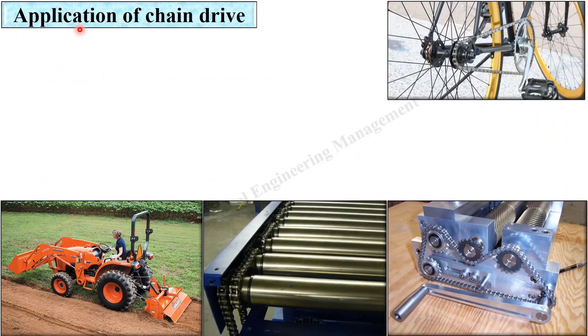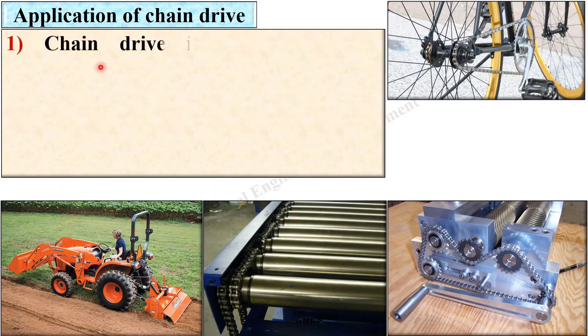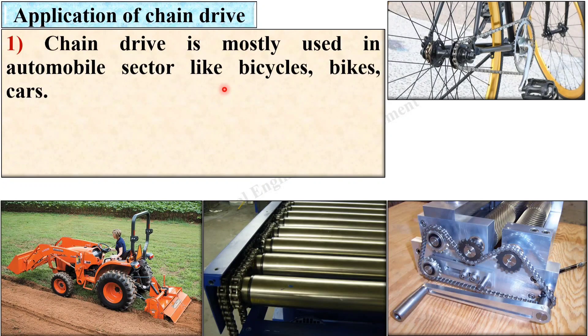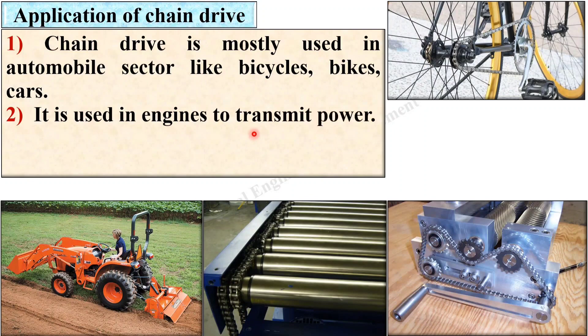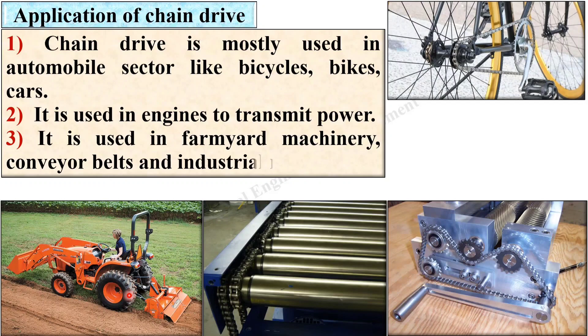Now the last one, application of chain drive. Chain drive is mostly used in automobile sectors like bicycles, bikes, cars, etc. Next, it is used in engines to transmit power. It is used in farm yard machinery, conveyor belts, and many industrial machineries.